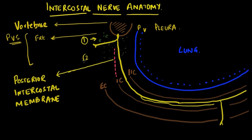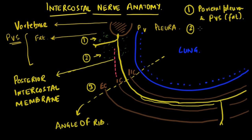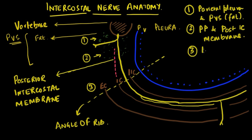We need to know the relationships of the intercostal nerve in three areas, labeled one, two, and three. The dotted line here represents the angle of the rib. In area one — the paravertebral space — the nerve lies between the parietal pleura and the fat. Medial to the angle of the rib, it lies between the posterior intercostal membrane and the parietal pleura. At the angle of the rib, it lies between the innermost intercostal muscle and the internal intercostal muscle.